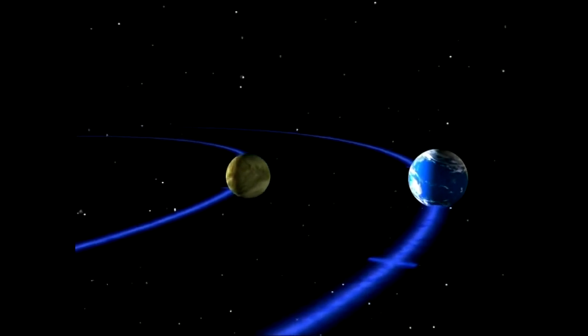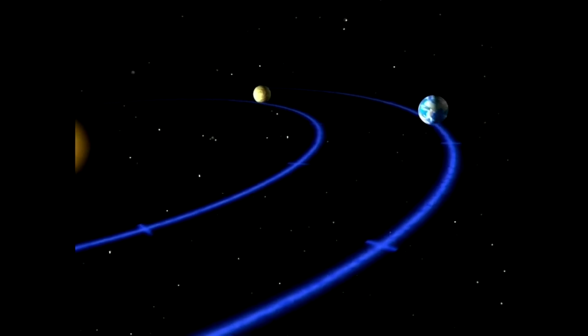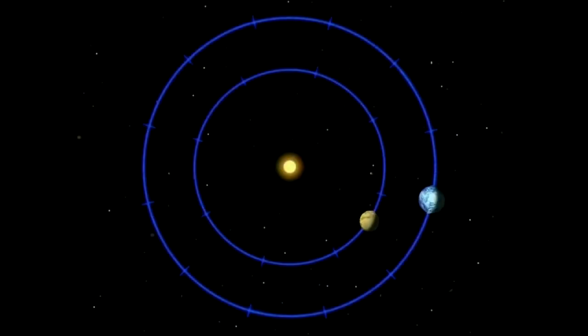Venus is closer to the sun than we are. The brightest of the planets, it's easily visible, sometimes in the evening, sometimes in the morning. It completes its orbit in less than eight months.